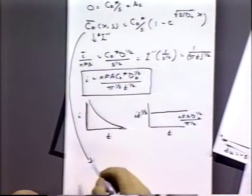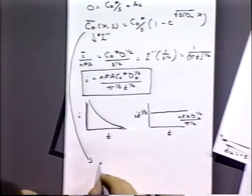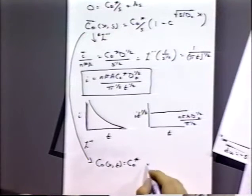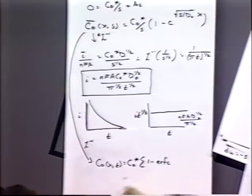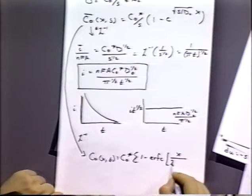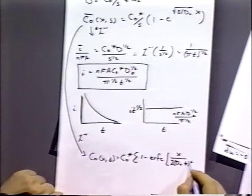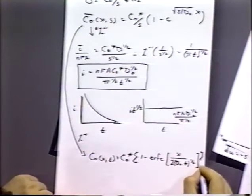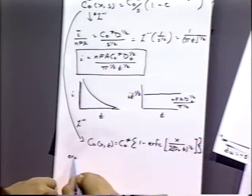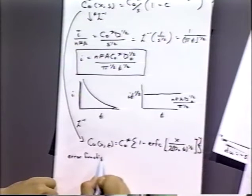For the concentration equation, the math is a bit trickier and we don't quite have all the tools yet, so I'll just write it down. Taking the inverse Laplace transform of the concentration expression gives a form involving the error function complement, ERFC. The error function complement is not something you encounter every day, but it comes up quite a bit in electrochemistry precisely because it appears in the Cottrell solution.